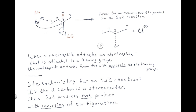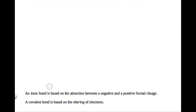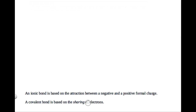Do you know what the difference is between an ionic bond and a covalent bond? Here are some definitions that will be helpful. We can think of an ionic bond as being based on the attraction between a negative and a positive formal charge — unlike charges attract, and that's the basis of an ionic bond. On the other hand, a covalent bond is based on sharing of electrons.